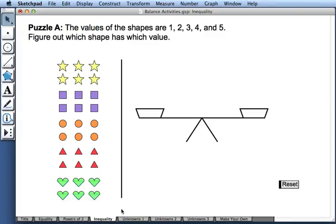Our next activity is based on inequality. Each of these five shapes has a secret value 1, 2, 3, 4, and 5. And our goal is to figure out which shape has which value.